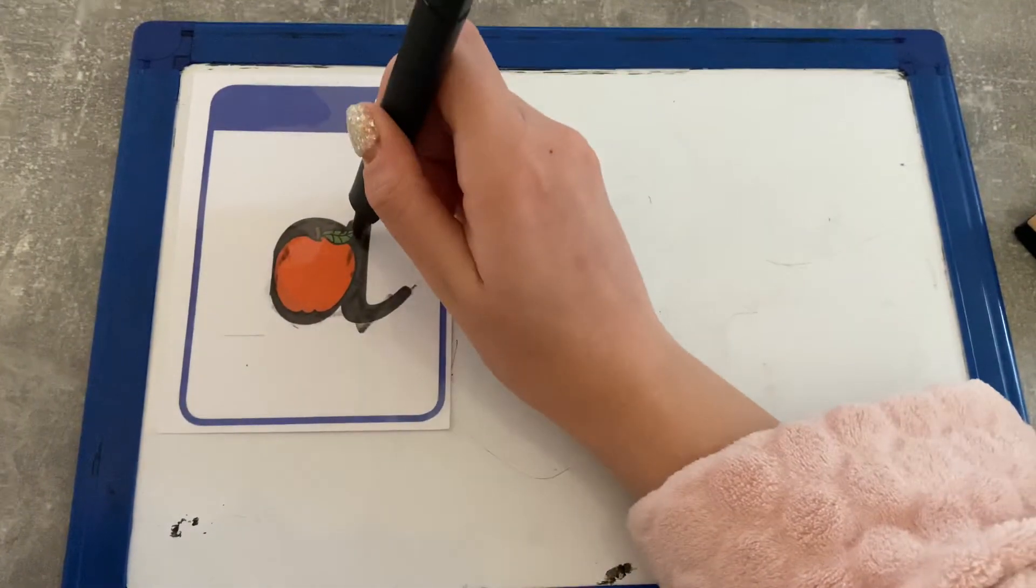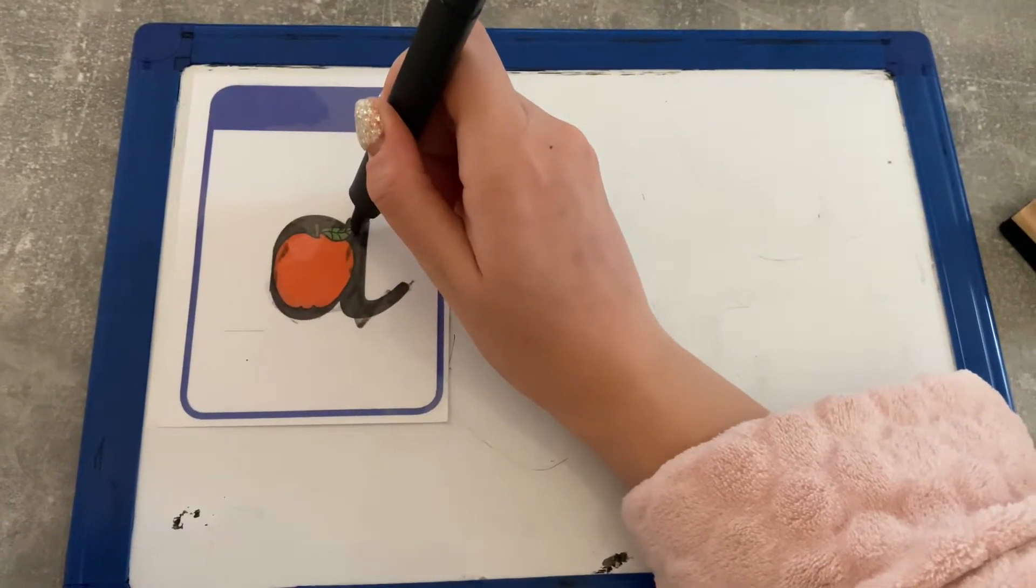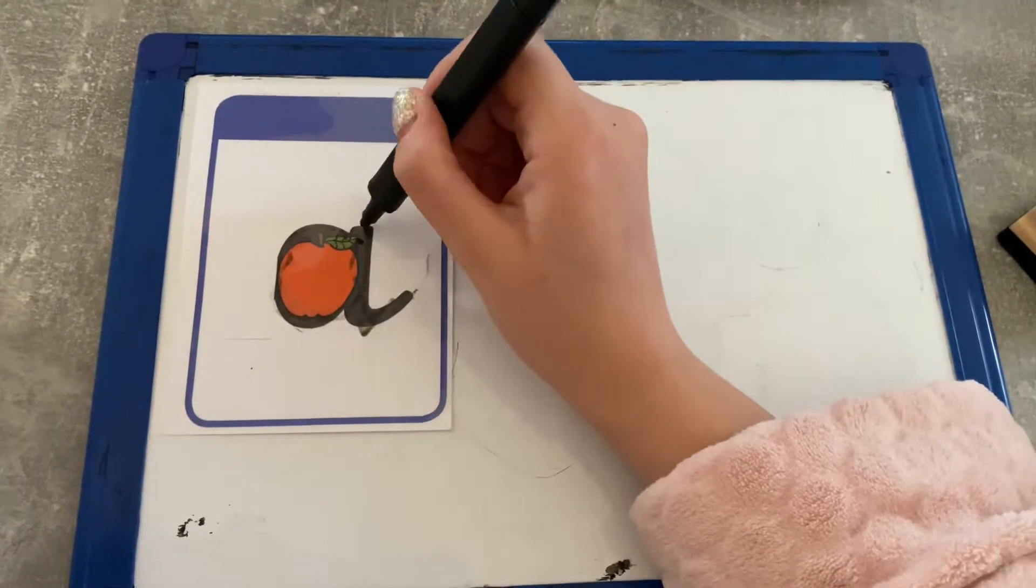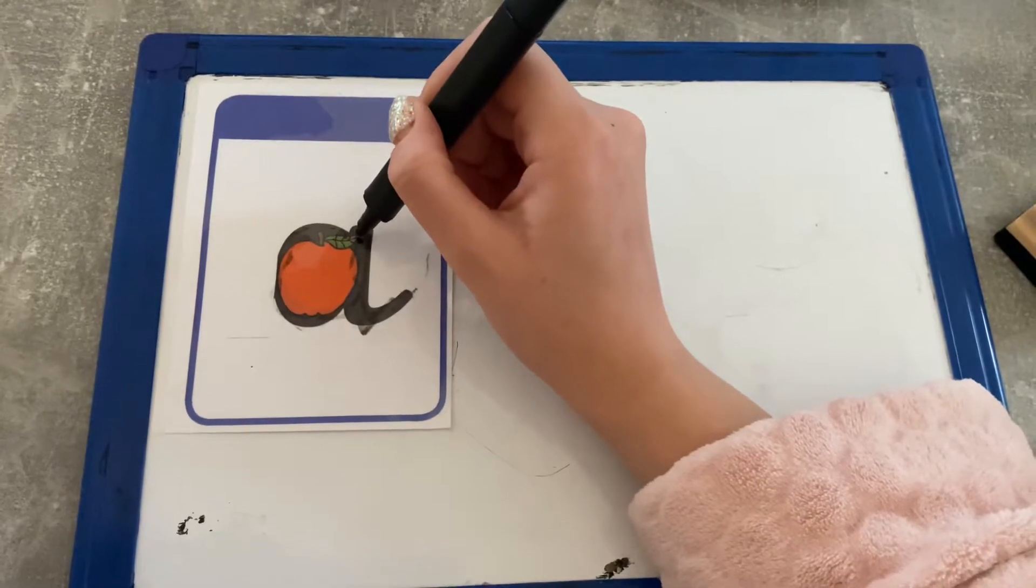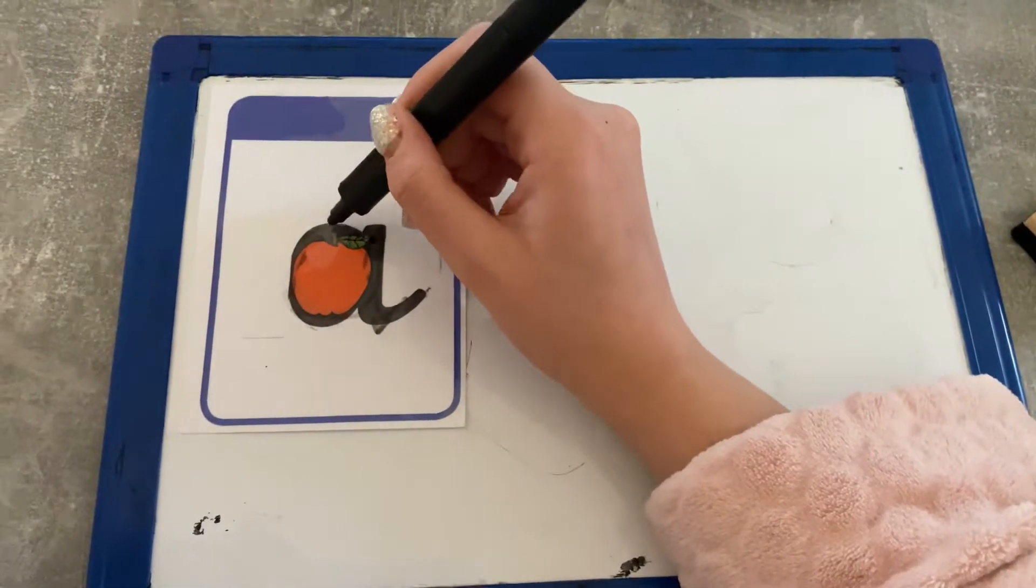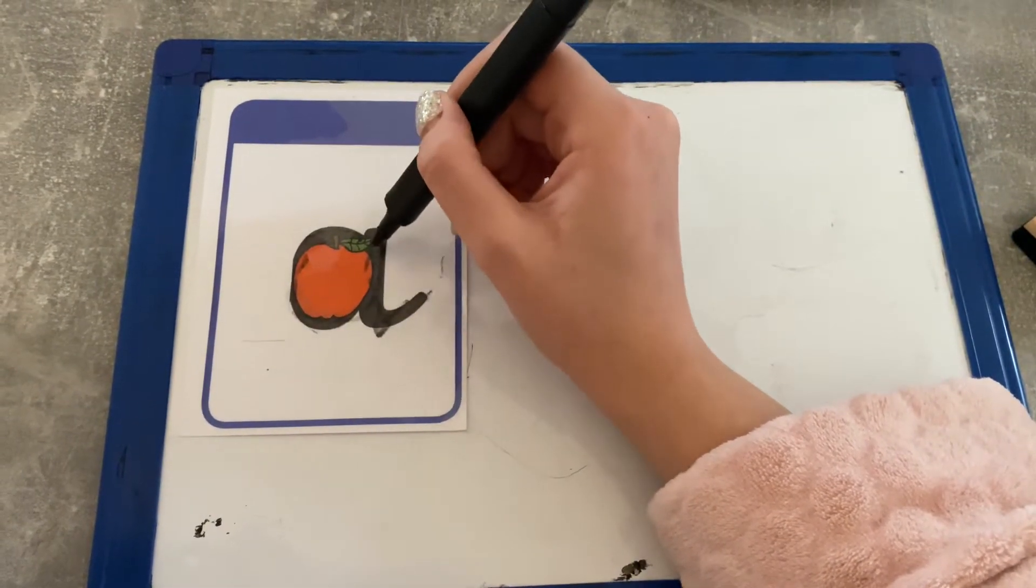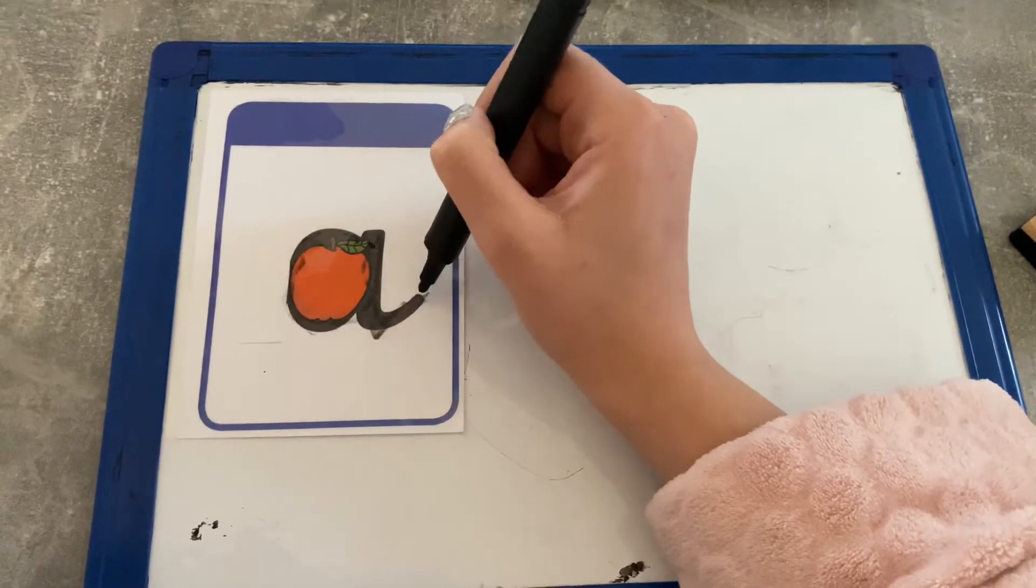You need to start at the top of this letter and go to the left first. Make sure you're not going down to start with. You need to go around the apple, down the leaf, lead out.